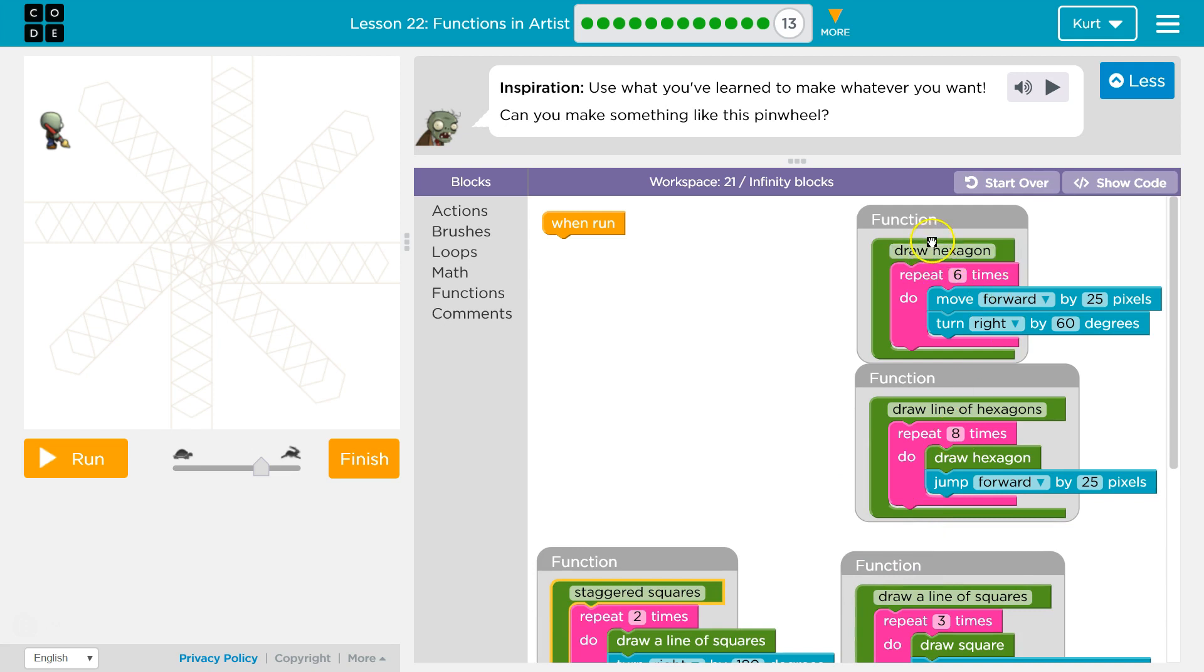Now this we've seen before because we made one. We're going to draw hexagons six times over. Okay, and what does that, when is this called? By this, draw a line of hexagons eight times. So we draw eight hexagons, right? Hexagons have six sides. So that's what that means, right? Not eight times over.